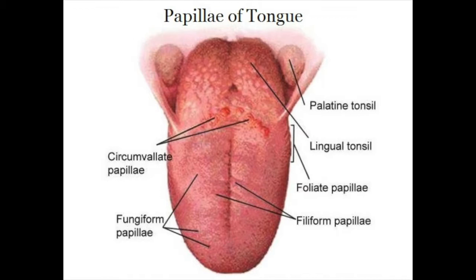These papilla are made up of three types: fungiform papilla, foliate papilla, and circumvallate papilla. Fungiform papilla are the most abundant papilla, with the highest concentrations being on the distal tip and bilateral aspects of the tongue. These mushroom-shaped papilla are known to respond to both sweet and sour tastes.